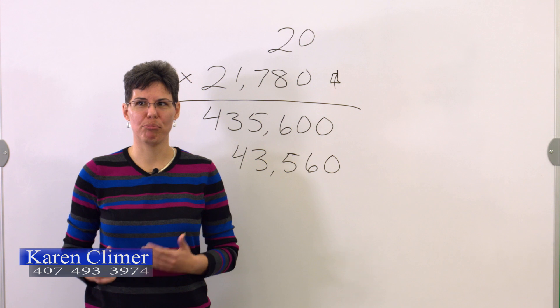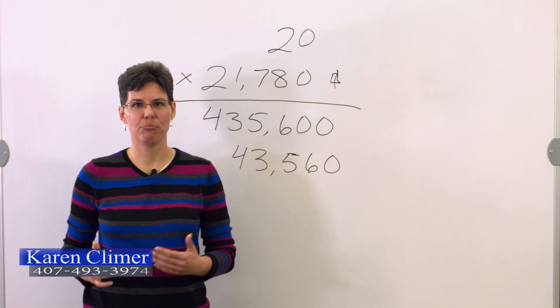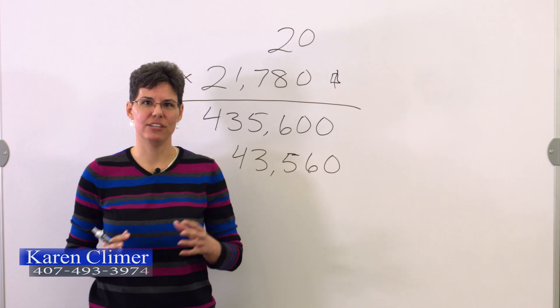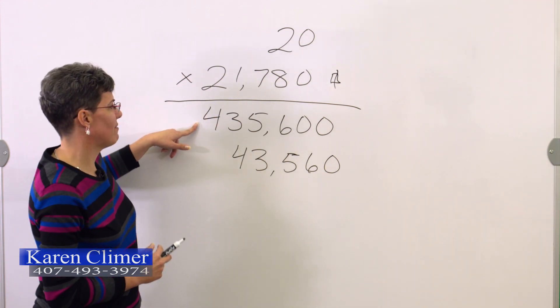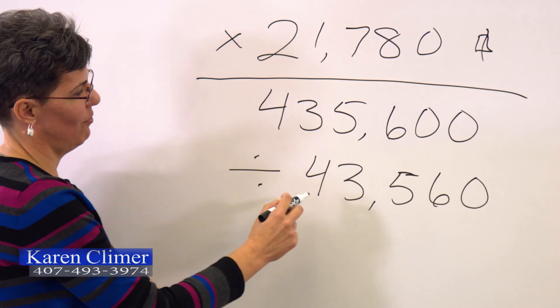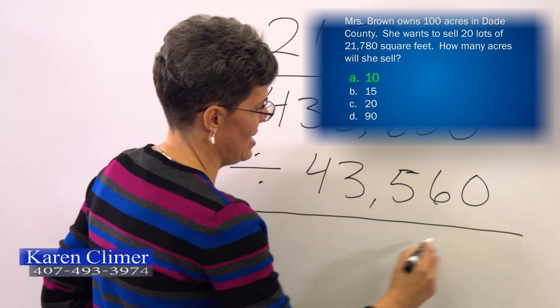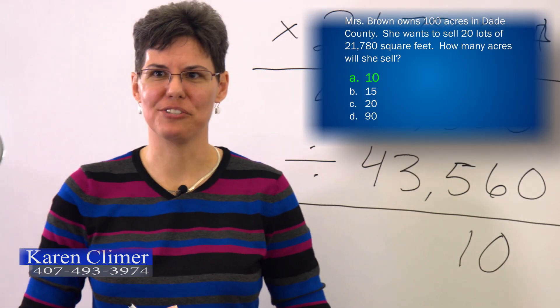Now in math terms, the word per means divided by. So if we're looking for feet per acre, it's feet divided by acres. So we're going to do 435,600 divided by 43,560 and that gives you 10 acres. So the answer is A.